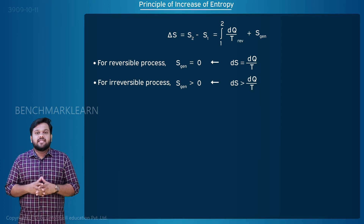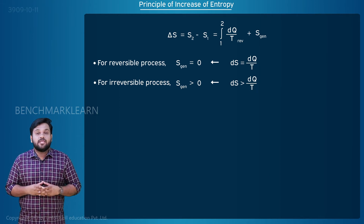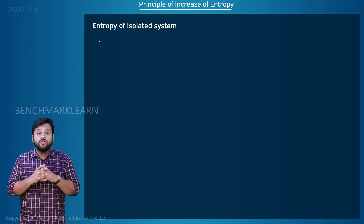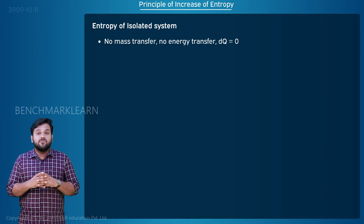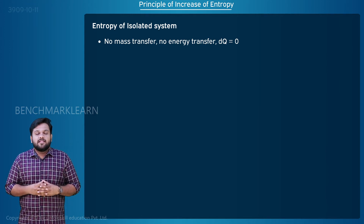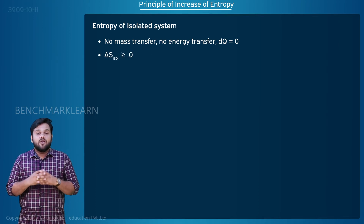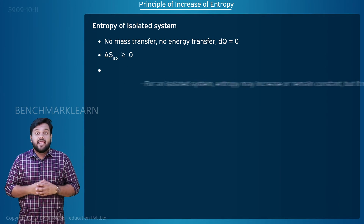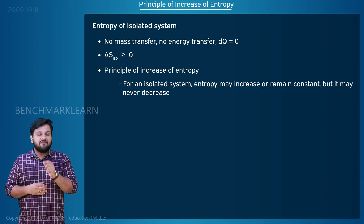For a system, the entropy change is ds greater than or equal to dq by T. For an isolated system — meaning no mass transfer and no energy transfer — dq equals zero. Therefore, the change in entropy becomes delta S isolated is greater than or equal to zero. For an isolated system, entropy may increase or remain constant, but it may never decrease.